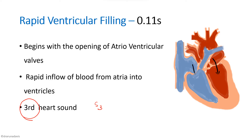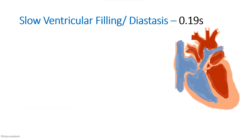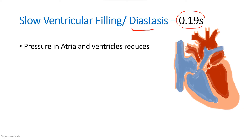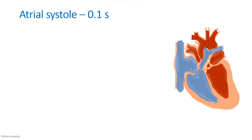S3 is normal only during pregnancy; it is pathological in other conditions such as heart failure. This is followed by the slow ventricular filling phase, also known as diastasis, which has the longest duration within diastole. During diastasis, pressure in both atria and ventricles has equalized at a low level, so ventricular filling proceeds very slowly.